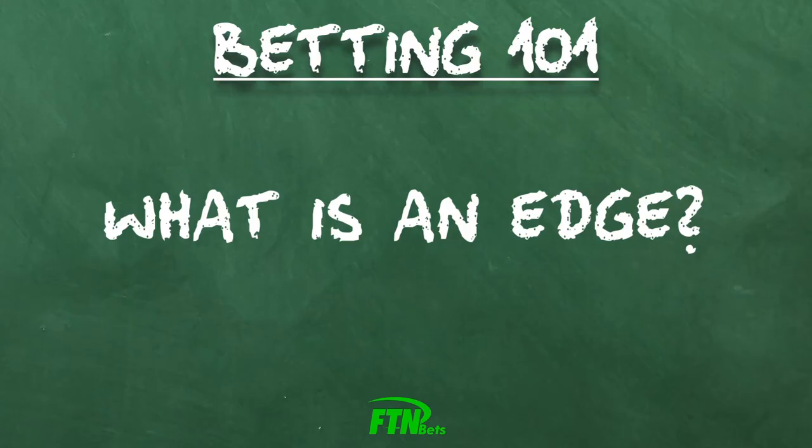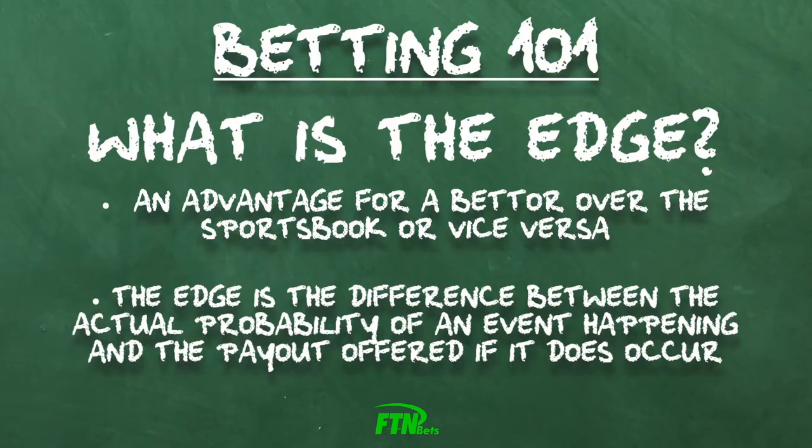Edge is a term used to explain an advantage for a bettor over the sports book, or vice versa. The difference between the actual probability of an event happening and the payout offered if it does occur is considered the edge.